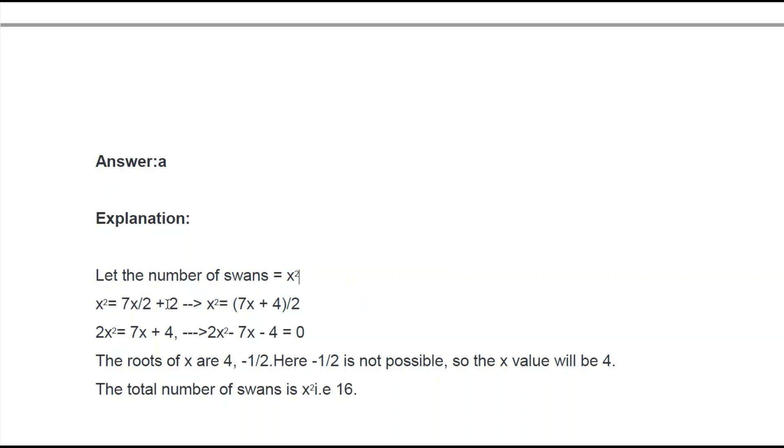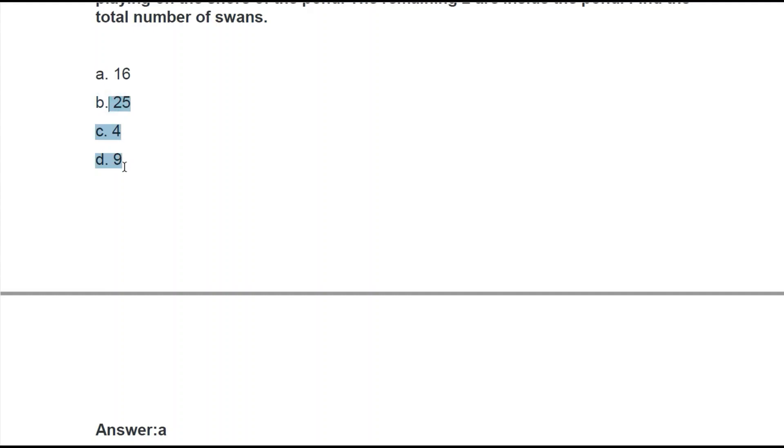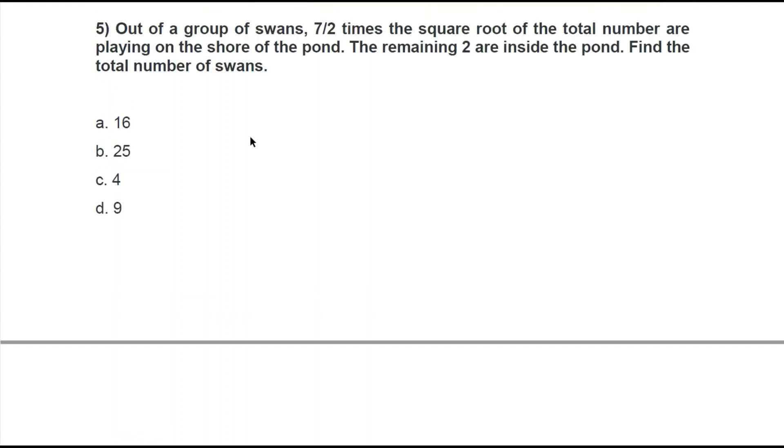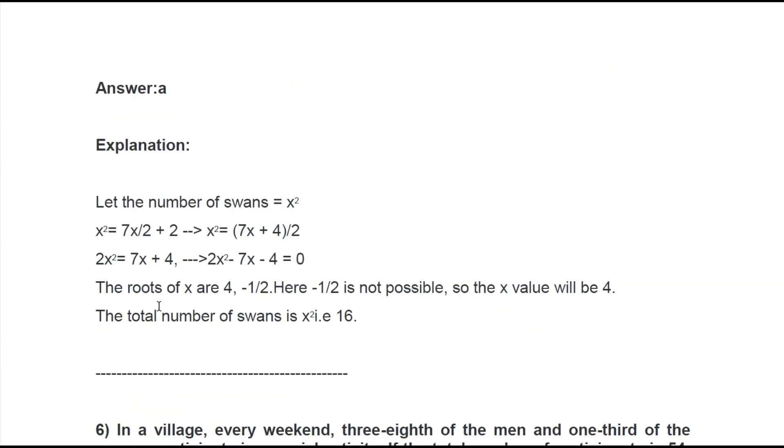The answer is a. The equation is: x = 7x/2 + 2. They got the roots of x as 4 and -1/2. As it is a swan, it cannot be -1/2, so the value is 4. As we're getting a possible value of x as 4, we can write x² = 16, and thus 16 is the total number of swans.